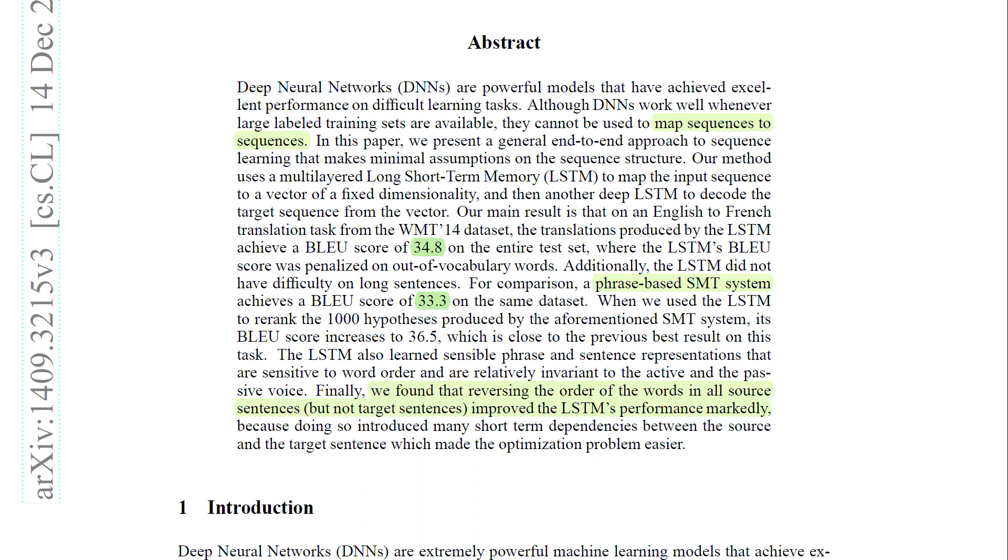We're going to go more in depth later on in the paper of how these models work. But as we can see here, the blue score that they obtain from training this model is 34.8. And compare this to the phrase-based SMT systems, which were used before these NMT neural machine translation systems, it achieved a blue score of 33.3. So the model outperformed the previous SMT systems.